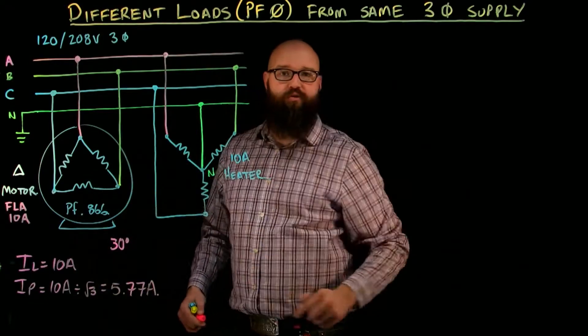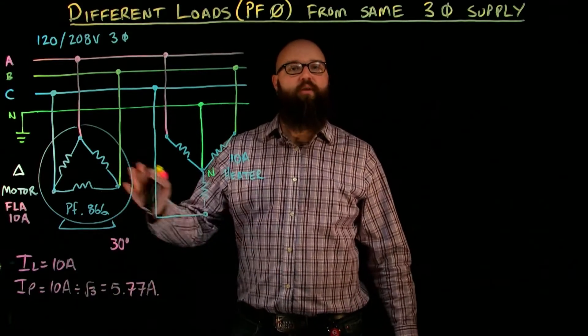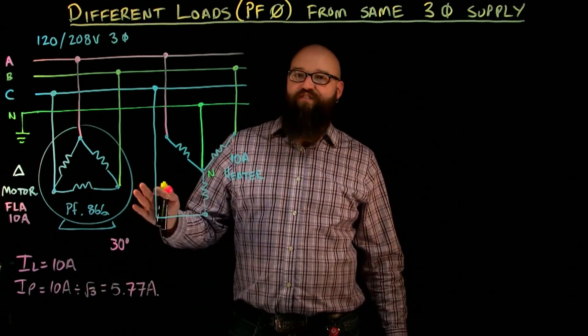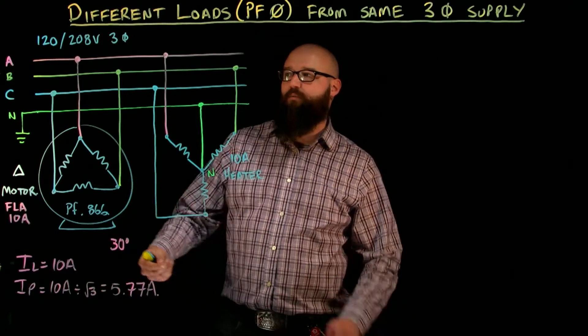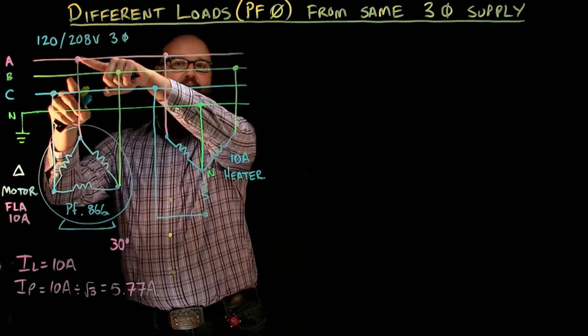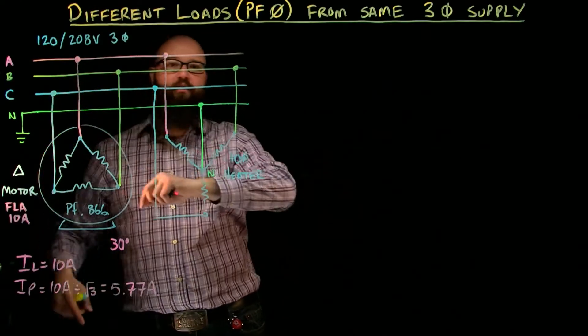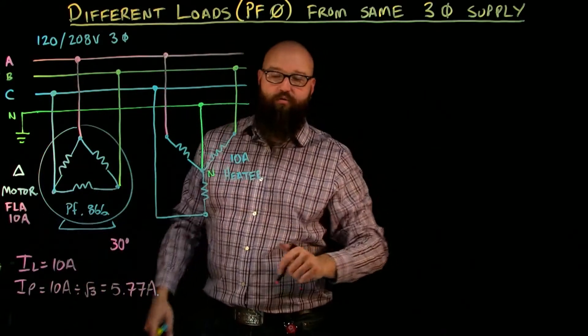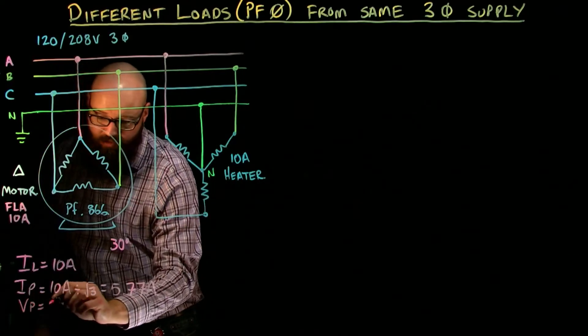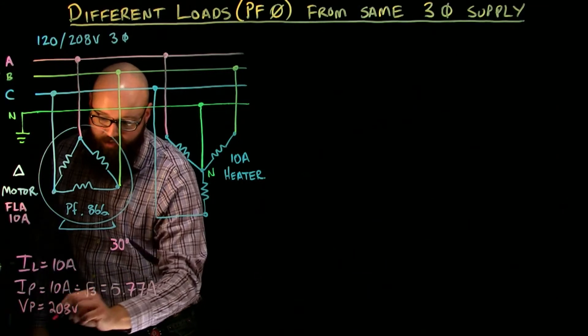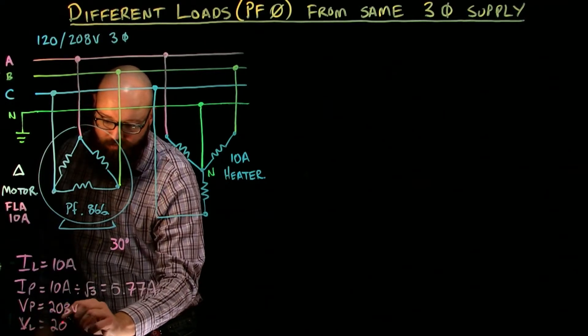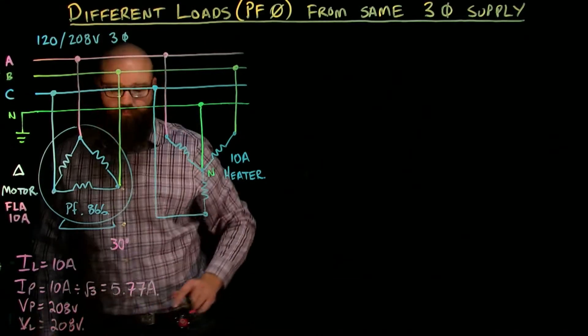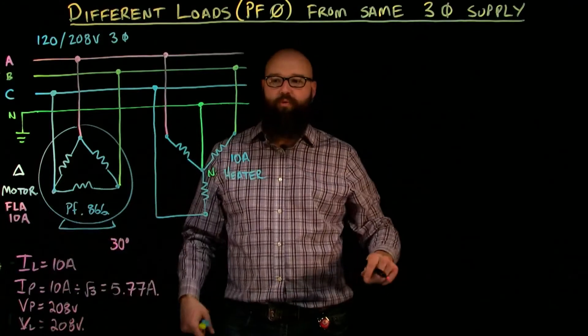Let's figure out what our phase voltage and line voltages are first. This is a Delta load so we need to remember one of the other Delta rules: V phase or voltage of the phase is equal to voltage of the line because if I was to measure B to A I'm really applying B to A across the phases in my load as well. So voltage of the phase 208 volts, voltage of the line also 208 volts. We'll plot those on the Cartesian plane after.